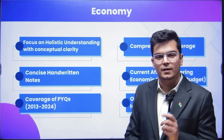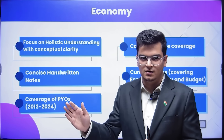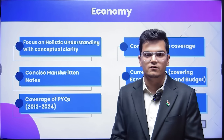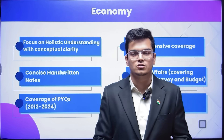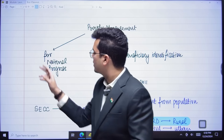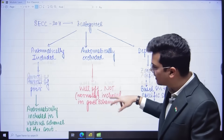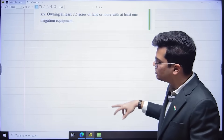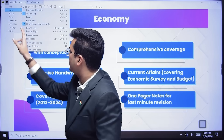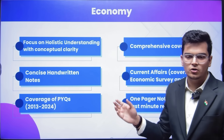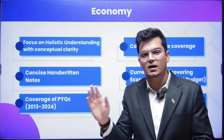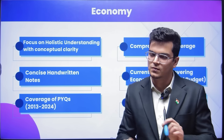We are going to cover economy comprehensively from scratch to the advanced level for the prelims. Whatever is required for economy and agriculture in prelims, I am going to cover it here. We will have concise handwritten notes in one place — notes that I have written myself — so you have a single point source. Then we are going to cover current affairs. Economic survey, budget, and all relevant current affairs of the last one year are my responsibility. You can let it go — you don't need to read PT365, monthly magazines, or newspapers. Because I am reading them.